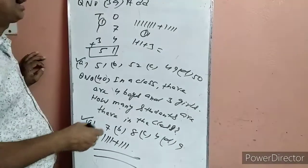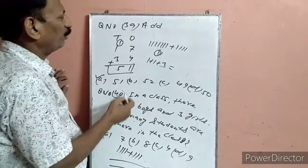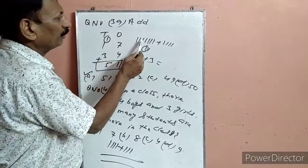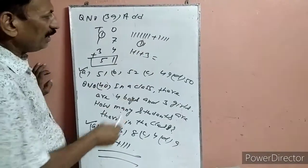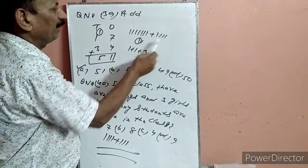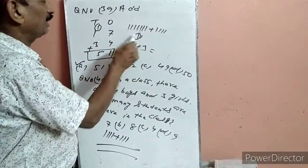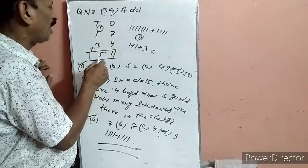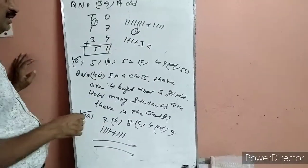Question 39: Add — 73 plus 34 (carry वाला). Units: 7 में 4: 1 से 11 तक count करके 11 हो गया. 1 को यहां रखा, carry 1 लेके चले. Tens: 1+2+1 = carry के साथ count करके 51. A पर टिक लगा दिया.